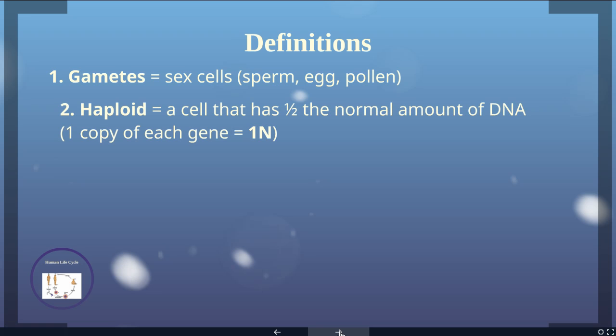When we say a cell is haploid, we're saying that cell has half the normal amount of DNA. Half the normal amount means it has one copy of each gene, and we refer to a haploid cell as a 1n cell.